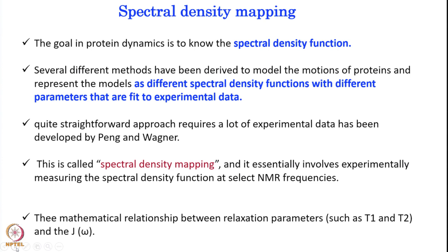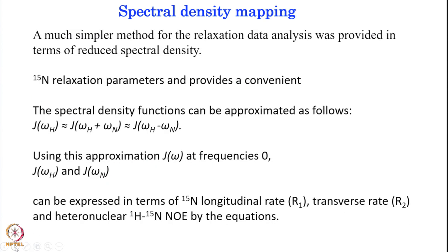In spectral density mapping, the main goal is to understand the spectral density, and several methods have been derived using different parameters fit to experimental data, as proposed by Peng and Wagner. Three mathematical relations between the relaxation parameters T1, T2 and J(ω) can be used to calculate these spectral density functions. They proposed a much simpler method called reduced spectral density mapping.